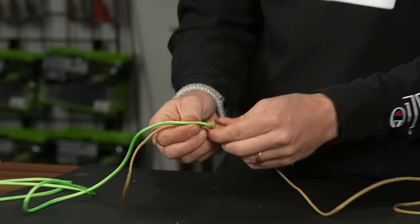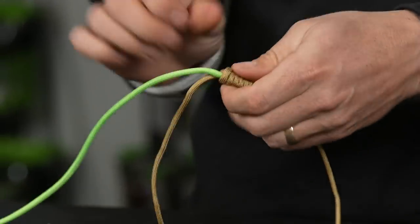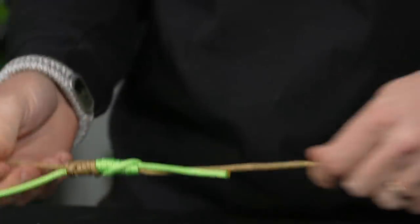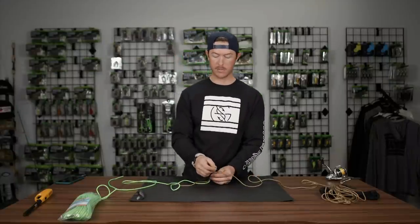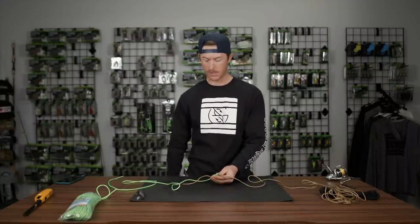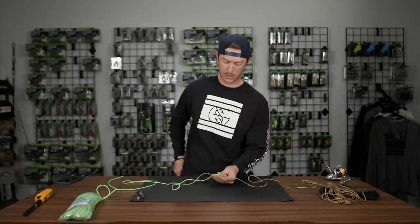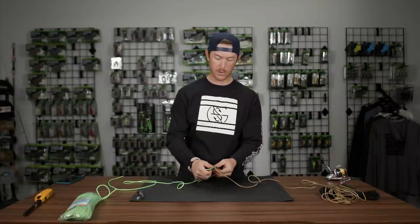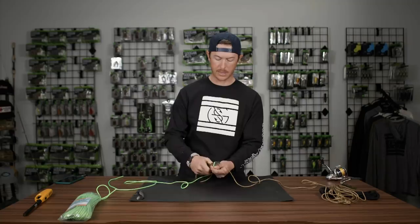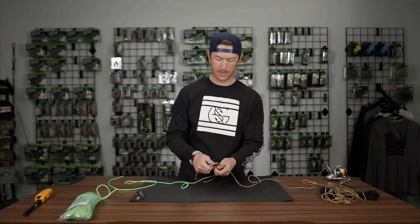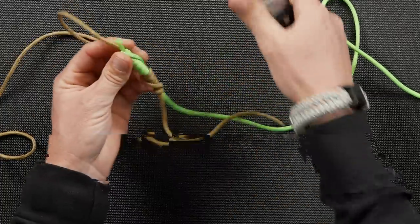Then you're just going to clip your tag ends. Now when you're using braid, you can leave a pretty good tag end on it because braid is very limp. It's not going to catch on your guides too much. But when you're using fluoro or mono, that might catch on your guides a little bit.